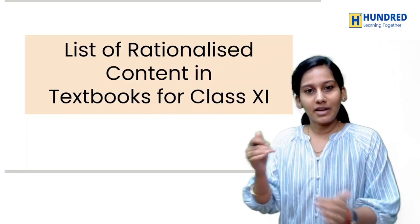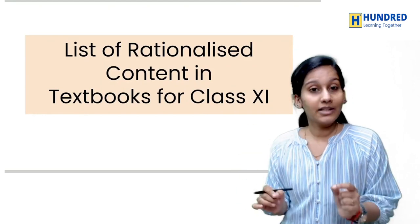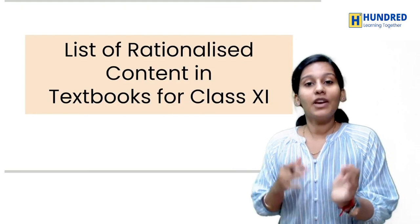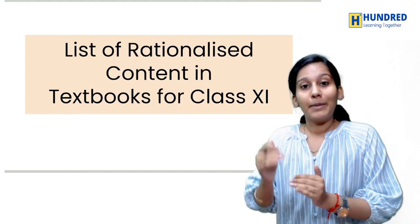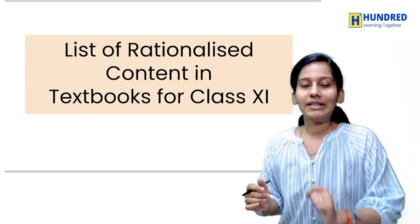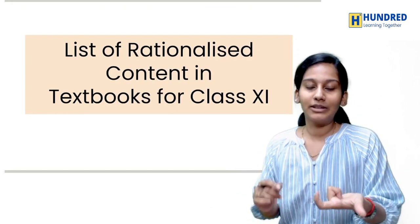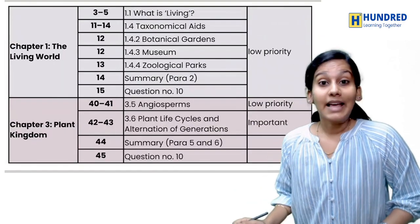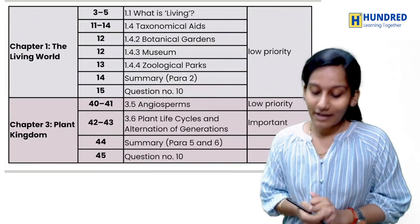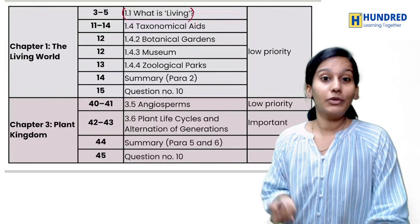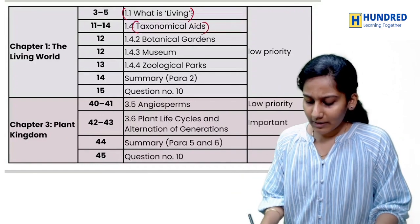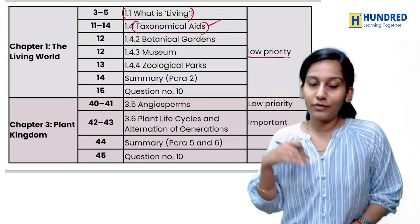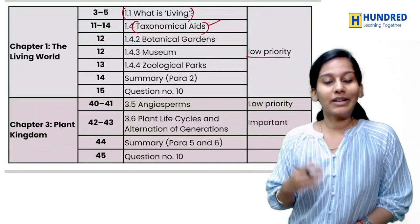Whether you follow old NCERT or new NCERT, check the schedule and chart for any topics or chapters removed or reprioritized. If you have the new NCERT, note there is a font size difference but the content has higher importance. You can also download the old book PDF — no doubt about that. Next, Living World: topic 1.1 'What is Living' is removed. Taxonomical Aids you can read, but as a whole the chapter is low priority for NEET. Remaining topics you can read after December.